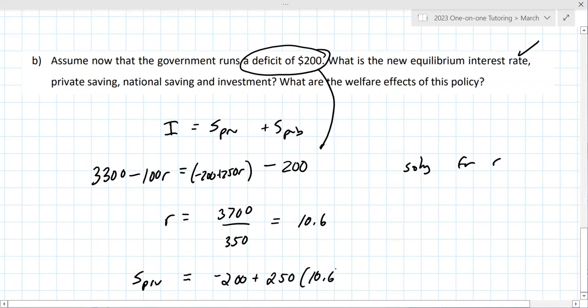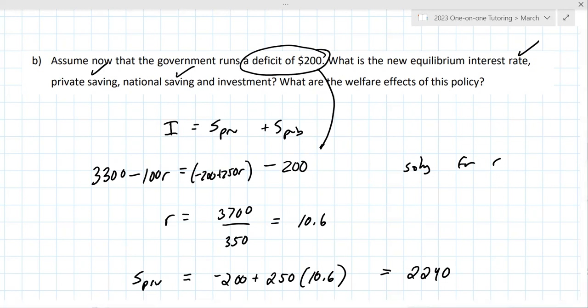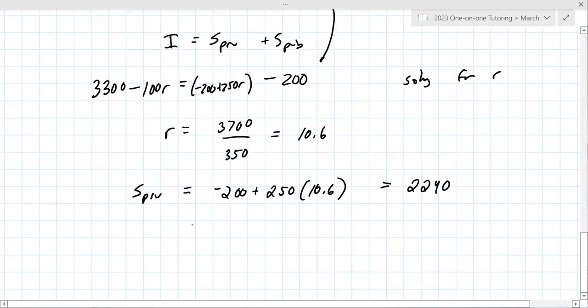Plugging 10.6 into the private savings equation gives approximately 2,240. National savings is asked for too — you take that number and subtract the 200 from it. So national savings equals 2,040 (2,240 minus 200).